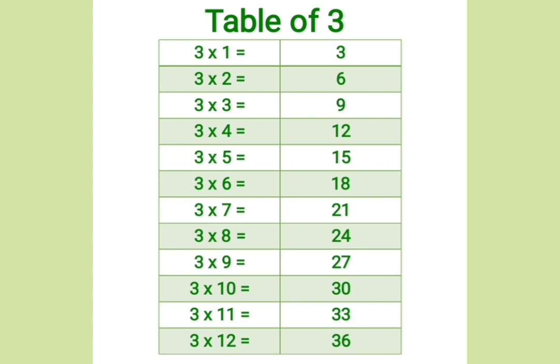Three ones are three, three twos are six, three threes are nine, three fours are twelve, three fives are fifteen, three sixes are eighteen, three sevens are twenty-one, three eights are twenty-four, three nines are twenty-seven, three tens are thirty, three elevens are thirty-three, three twelves are thirty-six.